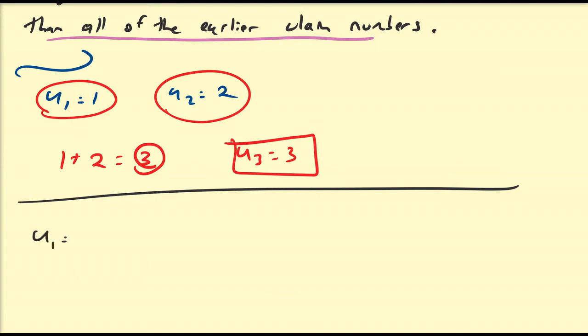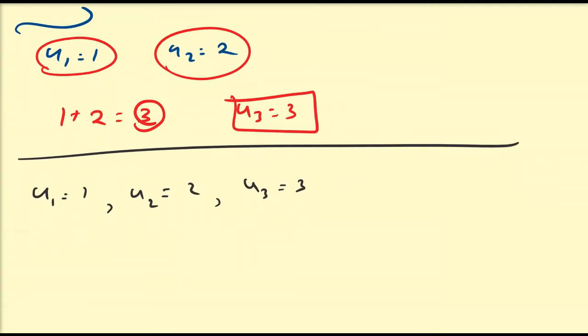So let's look at what we have here. So U1 is 1, U2 is 2, U3 is equal to 3. So let's see what U4 is. So what are the possible sums? So 1 plus 2 is going to be 3. 1 plus 3 is going to be 4.